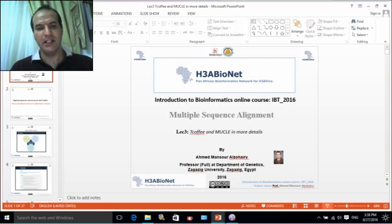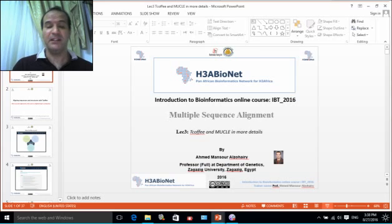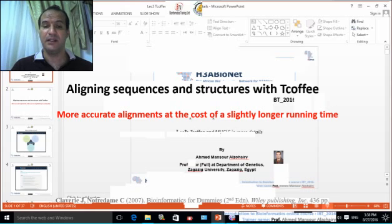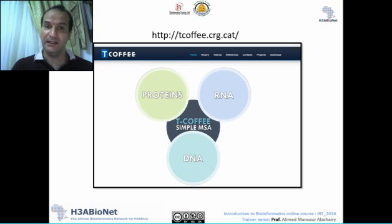Hello again everybody, this is lecture 3 from Introduction to Bioinformatics course IBT 2016, module number 5: multiple sequence alignment. In this lecture we'll talk about T-Coffee and MUSCLE in more detail. Aligning sequence and structure with T-Coffee is very accurate, at the cost of slightly longer time. You can look at the interface of T-Coffee and see that it can deal with RNA, protein, or DNA.